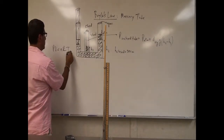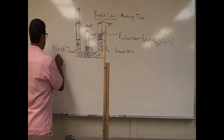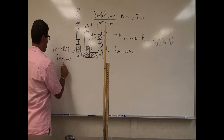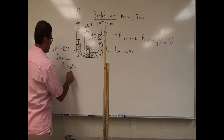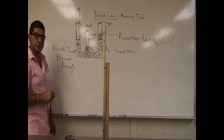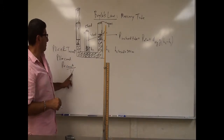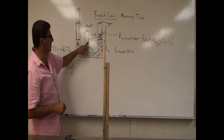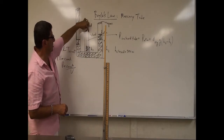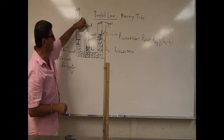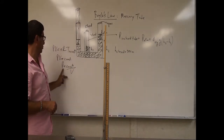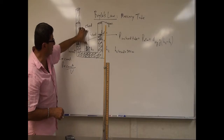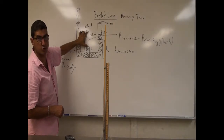Boyle's Law says that the pressure of a gas times the volume of a gas, if the temperature is constant, the pressure times the volume is a constant. That means the pressure times volume is like this — the pressure is inversely proportional to the volume. In my case, I don't really need to calculate the volume of the closed tube, since the area is not changing. All I need to prove is that the pressure is inversely proportional to the height of the column of air in the closed tube.